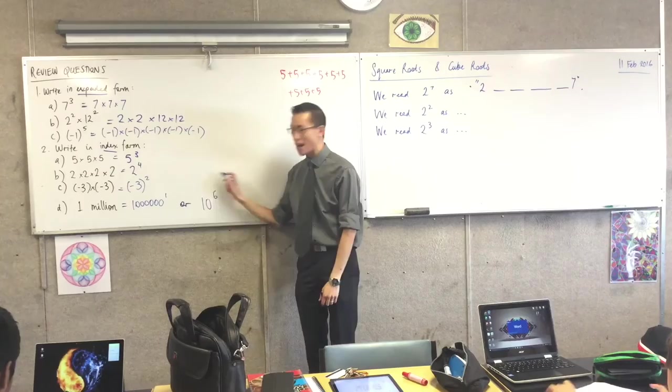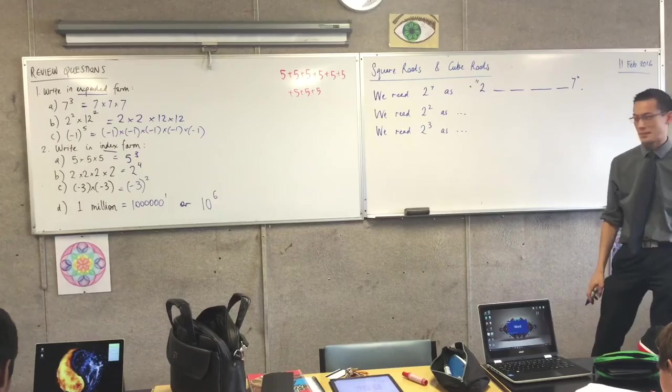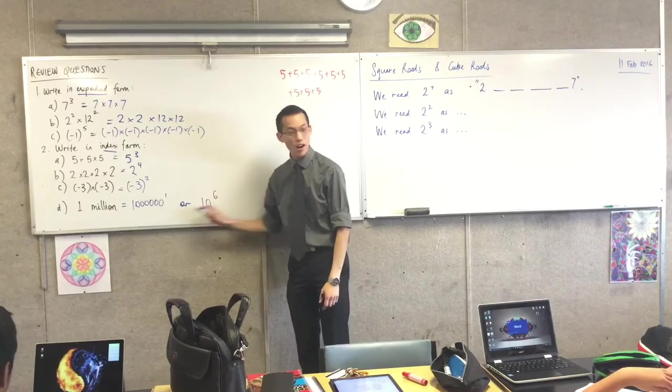Okay? So if you didn't catch that one, that's all right, but now you can recognize it. By the way, just before we leave it, this is in fact not the only pair of ways I can write a million in index form.